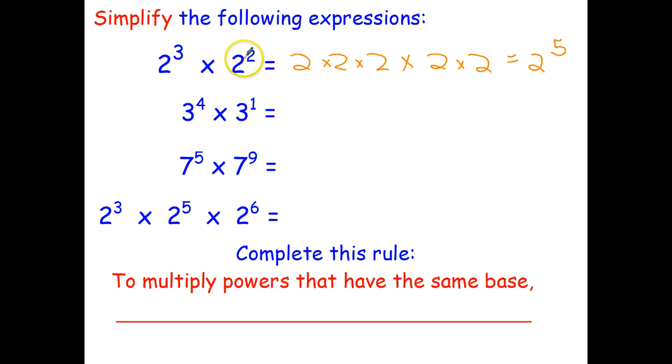That can be simplified as 2 to the power of 5. So 2 to the power of 3 times 2 to the power of 2 gives us 2 to the power of 5. And again what we're looking for here is a shortcut, so we don't have to do this middle step of expanding it out.